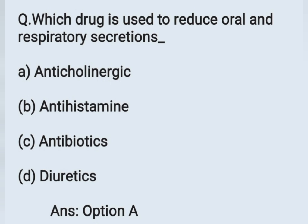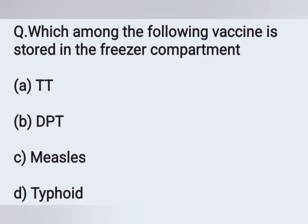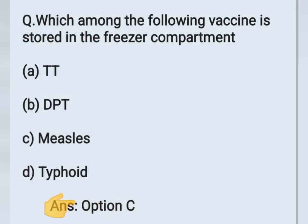The next question: Which of the following vaccines is stored in the freezer compartment? Option A: TT, Option B: DPT, Option C: measles, Option D: type 4. The vaccine stored in the freezer compartment is the measles vaccine. Option C is the correct answer.